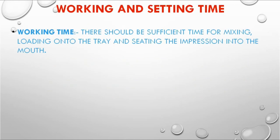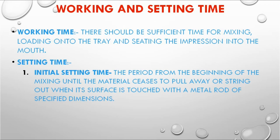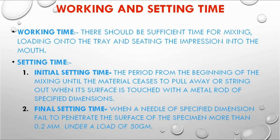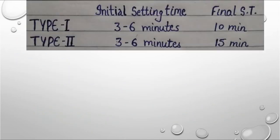ZOE has sufficient working time. Initial setting time is when the material ceases to pull away or string out when the surface is touched with a metal rod. Final setting time is when a needle of specified dimensions fails to penetrate the surface more than 0.2 mm under a load of 50 gm. Initial setting time is 3–6 minutes for both types. Final setting time for Type 1 is 10 minutes and for Type 2 is 15 minutes.